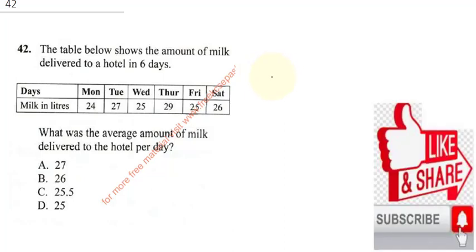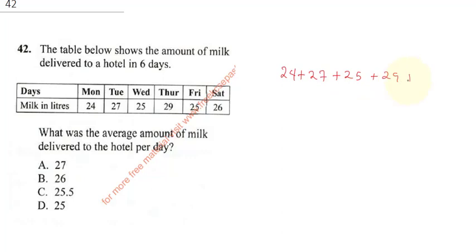For you to get your average, all you need to do is sum up the total numbers and divide by, that's 1, 2, 3, 4, 5, and 6. So that's going to be 24 plus 27 plus 25 plus 29 plus 25 plus 26 all divided by 6.